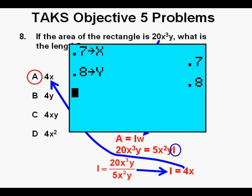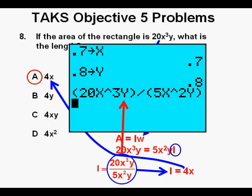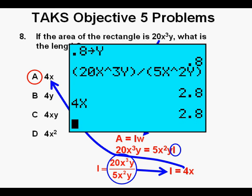We can check our answer in the calculator as we have done in earlier problems by substituting for x and y. And here I've substituted 0.7 for x and 0.8 for y. Then we can enter the expression for area divided by width and closing both the numerator and the denominator in parentheses. Then press enter. We get a length value of 2.8 when x equals 0.7 and y equals 0.8. Then we enter answer a, which is 4x. Then press enter. And we also get 2.8, and that confirms that a is the correct answer.